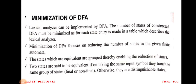The number of states of a constructed DFA must be minimized, and for each state an entry is made in a table. Minimization of DFA focuses only on reducing the number of states already constructed. States which are equivalent are grouped together, enabling reduction of states. Two states are said to be equivalent if, on taking the same input symbol, they transition to the same group of states — that is, both go to a final state or both go to a non-final state. Otherwise they are called distinguishable states.